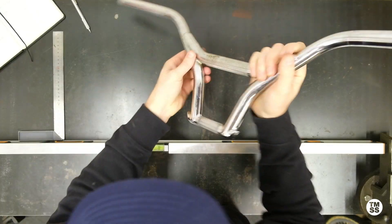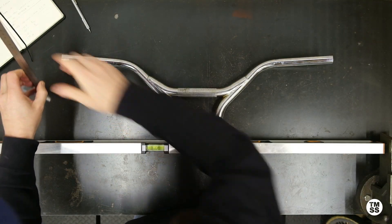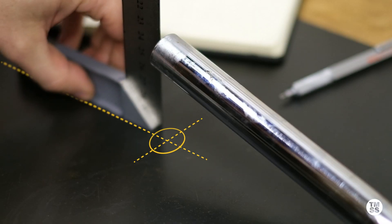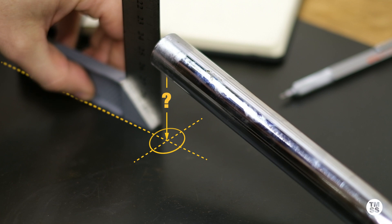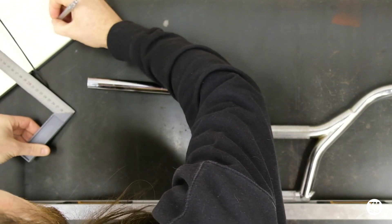Next, we're going to flip the bars over and now we're checking the sweep. To do that, we're going to measure from the table up to where the handlebar meets the ruler. In this case, we're checking to make sure that one side of the handlebars is not bent further forward or back compared to the other.